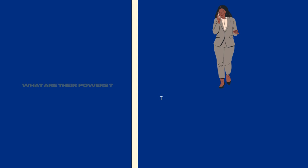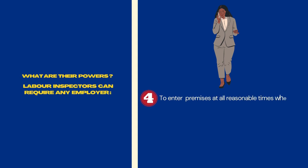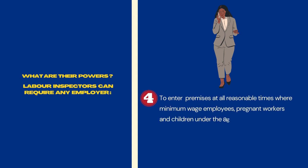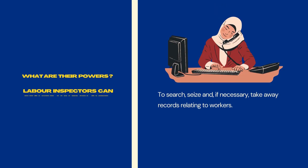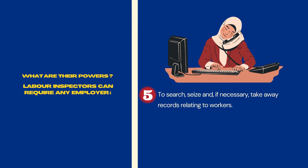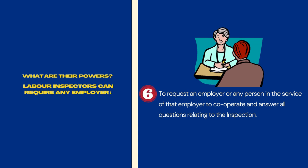Labour Inspectors also have the power to enter premises at all reasonable times where minimum wage employees, pregnant workers, and children under the age of 18 years are employed, to search, seize and, if necessary, take away records relating to workers, and to request an employer or any person in the service of that employer to cooperate and answer all questions relating to the inspection.